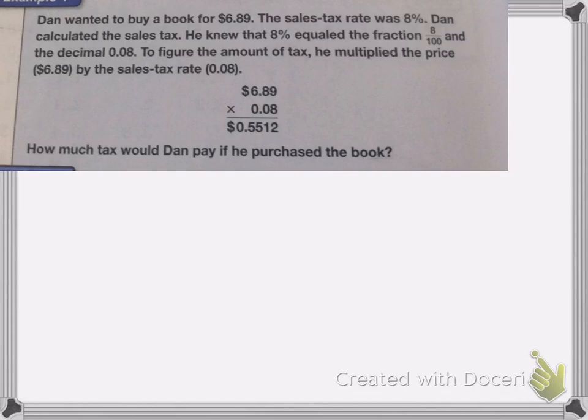Dan wanted to buy a book for $6.89. The sales tax rate was 8%. Dan calculated the sales tax — he knew that 8% equaled the fraction 8 one-hundredths, and the decimal 0.08. To figure out the amount of tax, he multiplied the price by the sales tax rate. How much tax would Dan pay if he purchased the book?